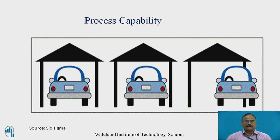Let us take an example of the car and a garage. If the garage size is more than the car size, then we can drive the car into the garage and park it easily. So the garage is nothing but a specification limit, and the car is nothing but the control limit. These are three situations: in the first, the center of the car is at the center of the garage; in the second, it is moving towards one side; in the third situation, there is friction or it is touching the wall of the garage, which indicates that the process is out of control.